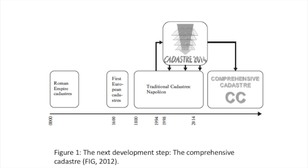In 1999, the FIG — International Federation of Surveyors — proposed a vision called Cadastre 2014, which includes a comprehensive cadastral framework with six key visions. The first is legal rights to land; the second is that the separation between the land register and cadastral map will be ended.